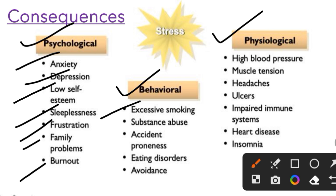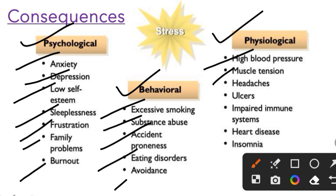In behavioral consequences, you may see excessive smoking, substance abuse, accident proneness, eating disorders, and avoidance. Physiological consequences include high blood pressure, muscle tension, headache, ulcer, impaired immune system, heart disease, and insomnia. These are psychological, behavioral, and physiological consequences we can see in stress.